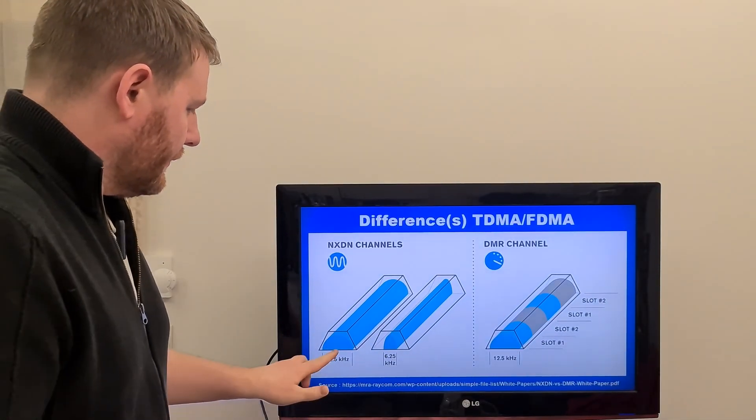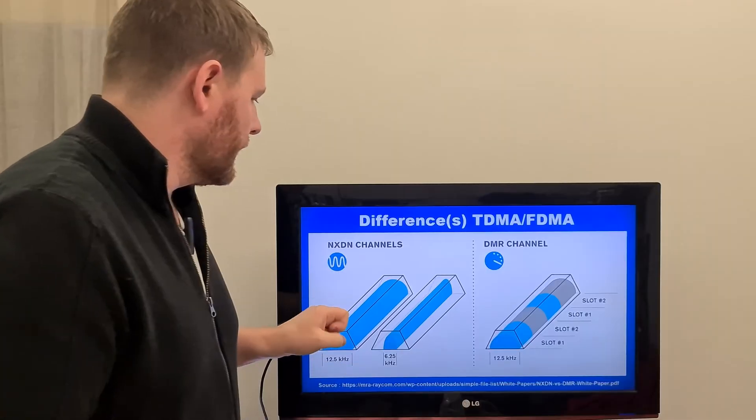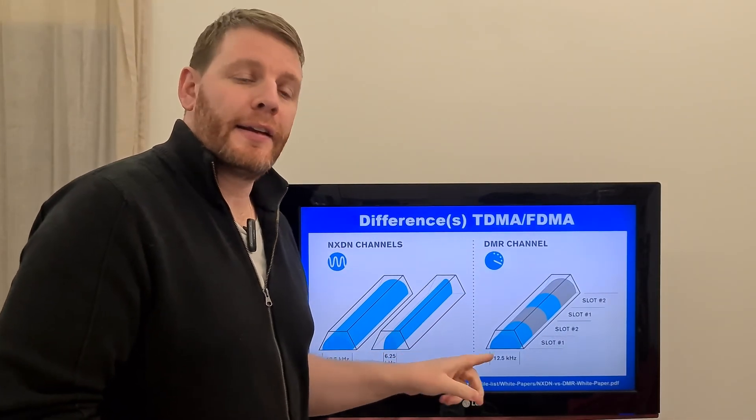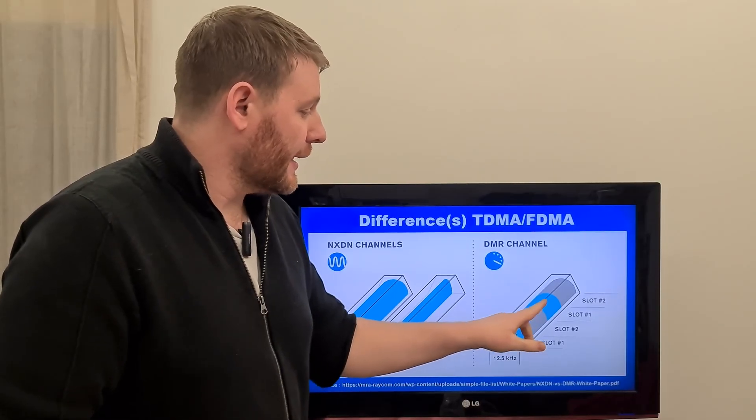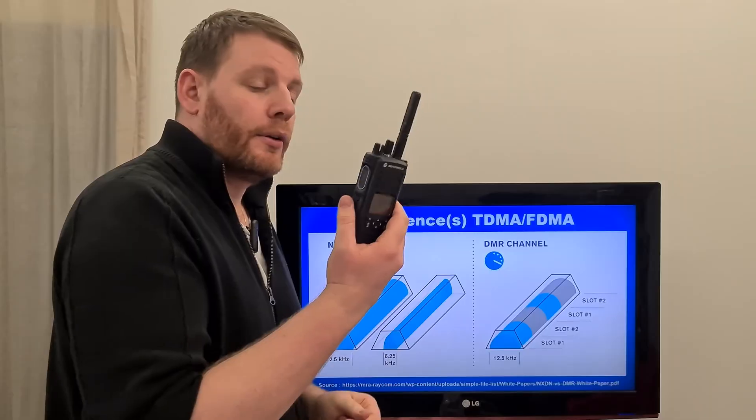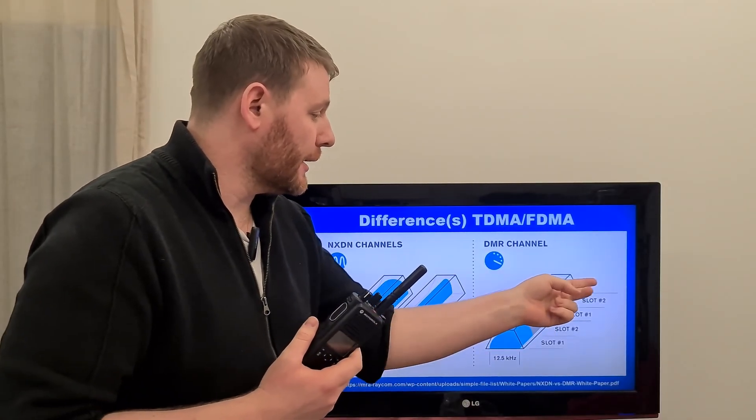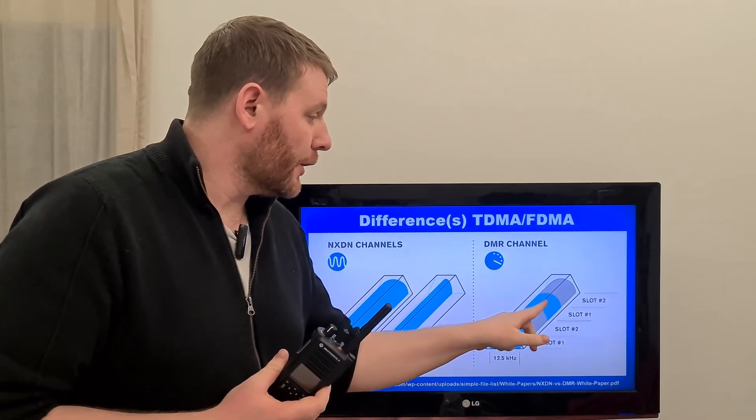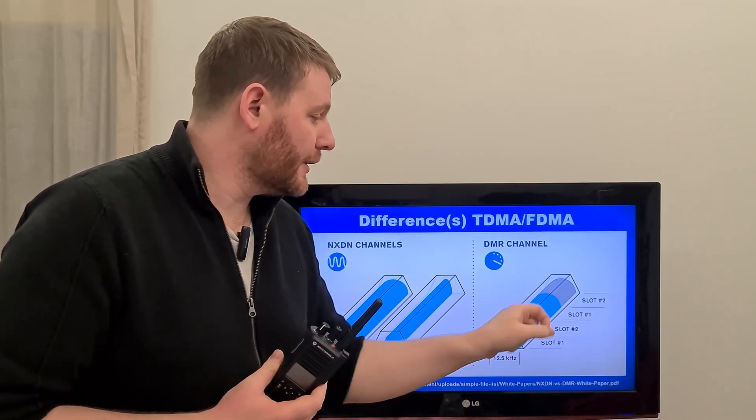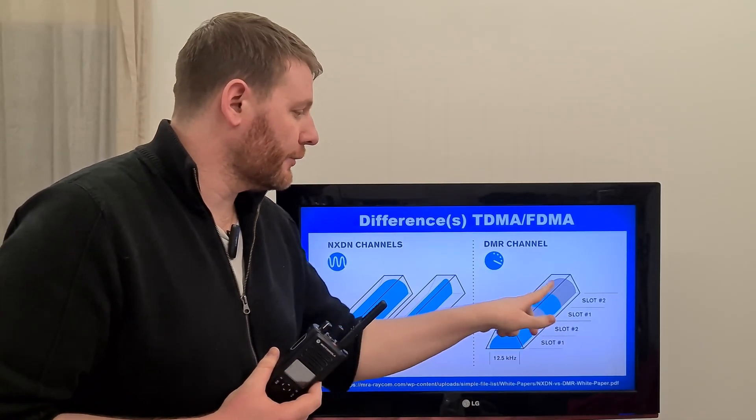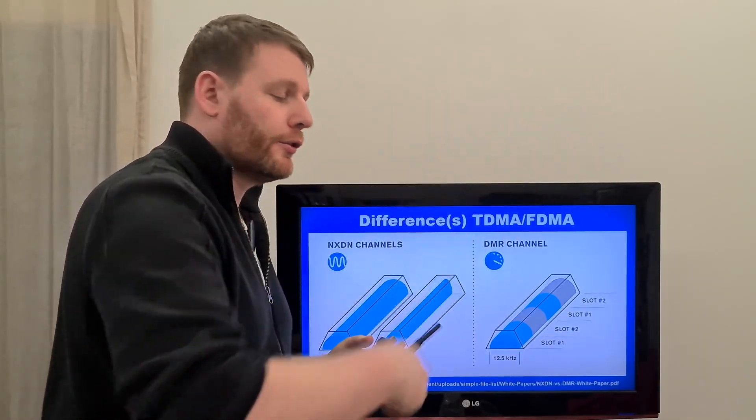Let's see now the difference between NXDN channel and DMR channel. DMR channel, as I said, use time division multiple access. So you can have two users at the same time. Each user have only 30 milliseconds reserved to talk, to send the information, and after it changed to the first user.